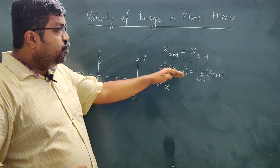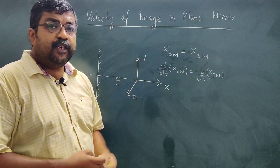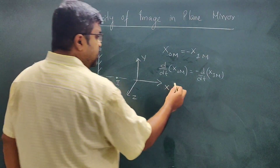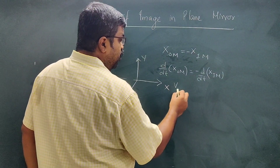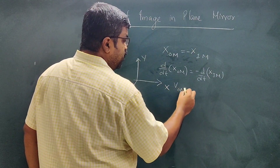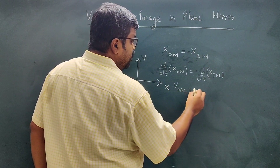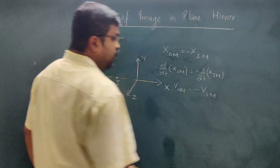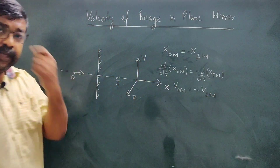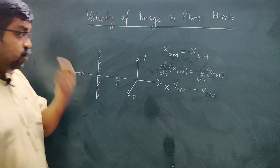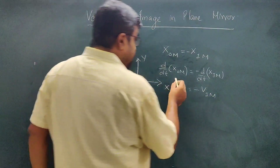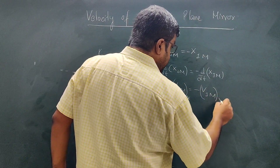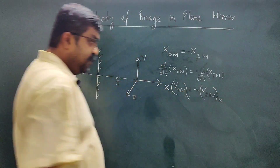If I differentiate position with respect to time, I get velocity. So: velocity of object with respect to mirror is equal to minus of velocity of image with respect to mirror — but this relationship is along the x-axis, which is the axis normal to the mirror.